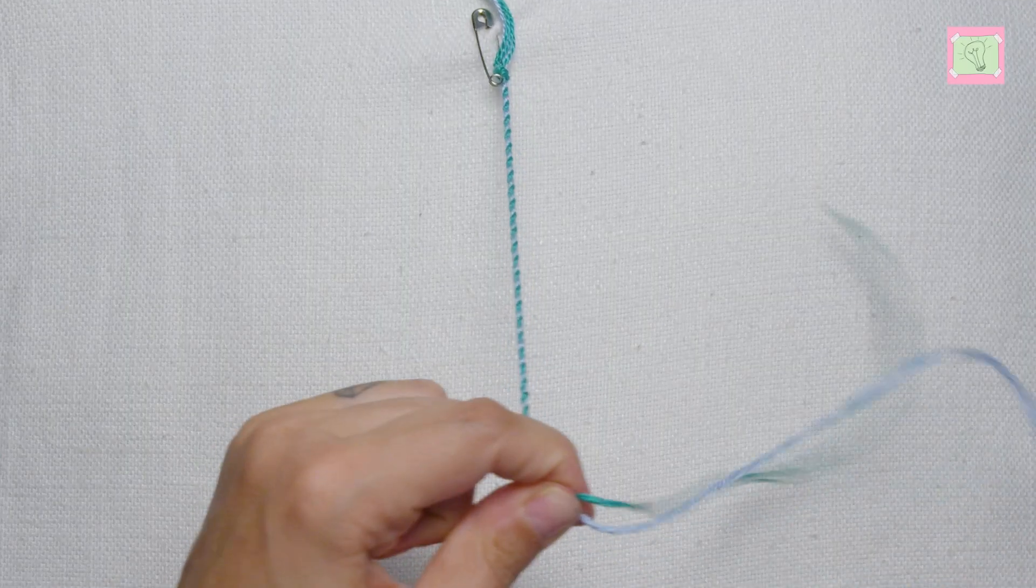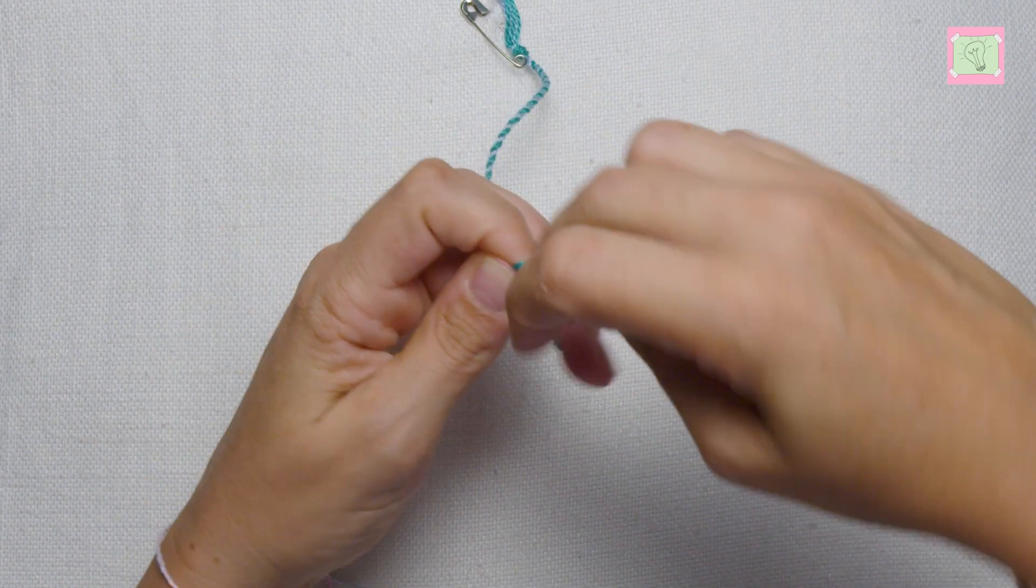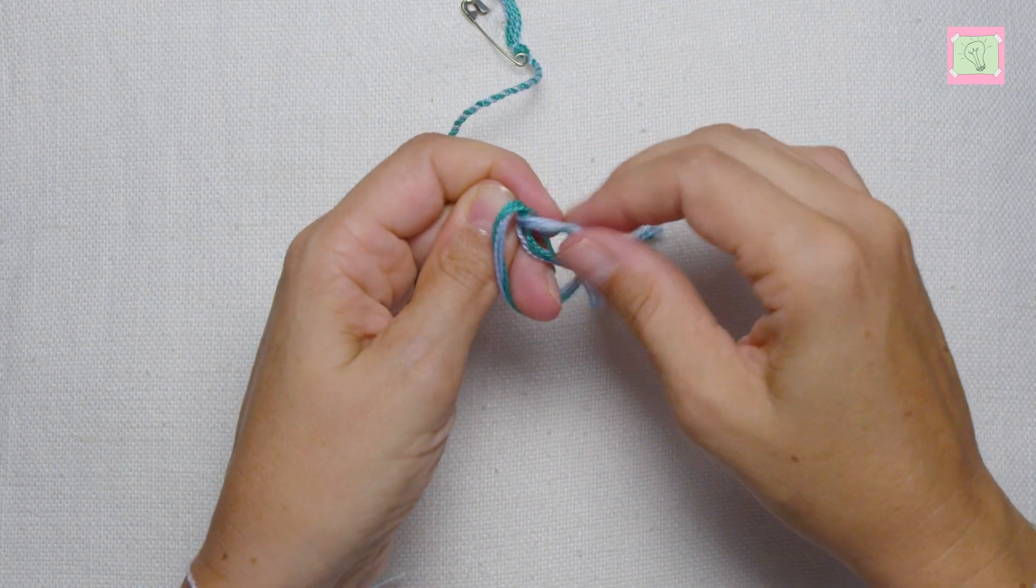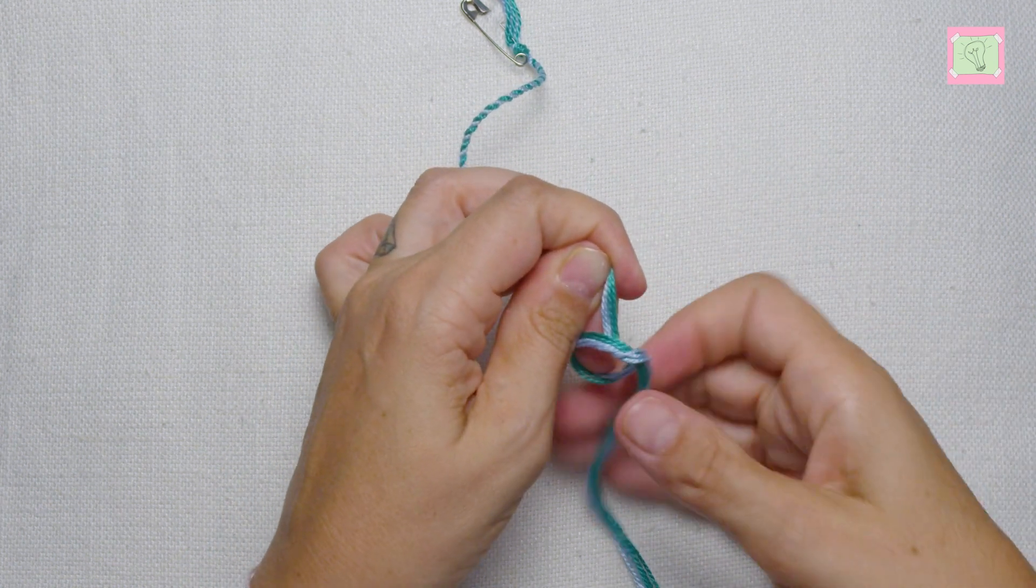When the bracelet is long enough I knot all the threads together. The knot should be exactly at the point where the twisted bracelet is finished.